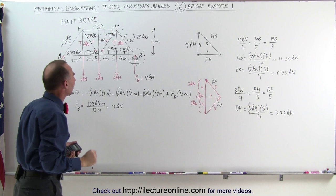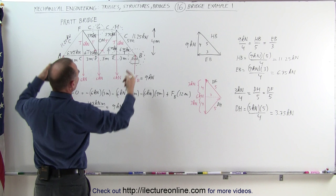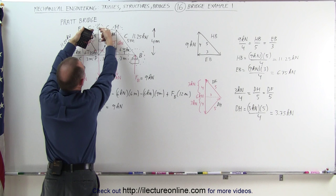Looking at this joint, the compression is pushing forces in this direction. Since the beams are pushing against this joint and the joint would collapse without these two members, they must be under compression. So member G to H and the corresponding member on the other side are both under compression.